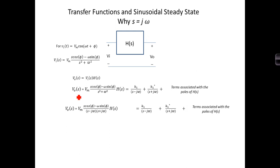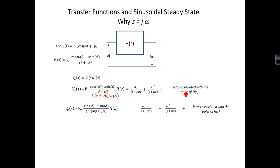Given that, V out of S is equal to the input transform times H of S. Traditionally, we determine V out of T by inverse transforming this expression using its partial fraction expansion. We factor the denominator term into S minus J omega times S plus J omega, giving terms K1 over S minus J omega plus K1 conjugate over S plus J omega. We lump all terms associated with the poles of H of S separately, acknowledging that because H of S is stable, these terms all die out in the steady state.